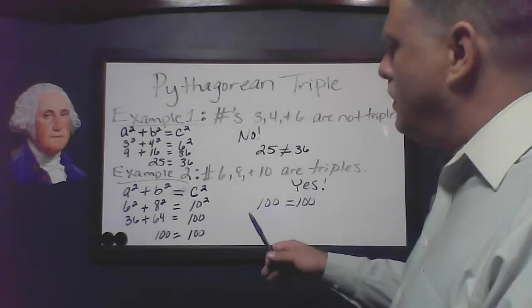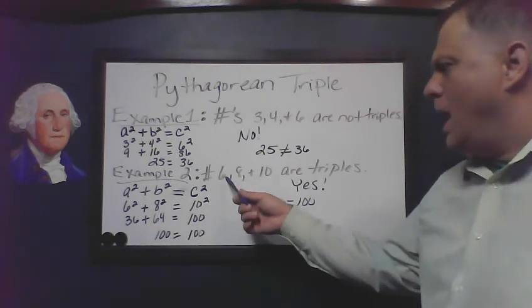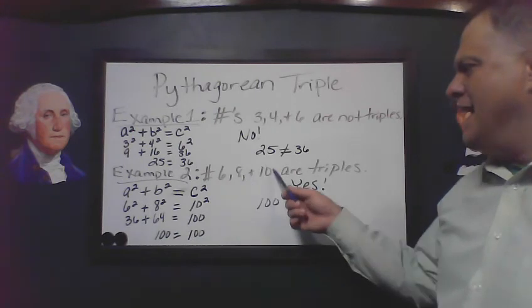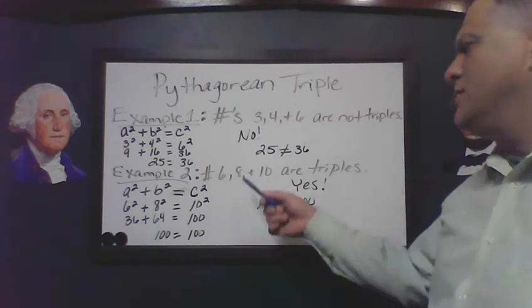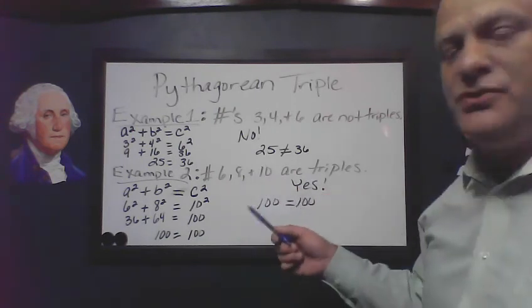Example number 2: we're going to try to plug in 6, 8, and 10. 6, 8, and 10 are, in fact, triples, and I'll show you why.